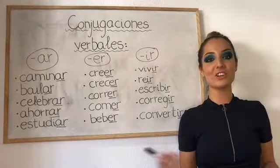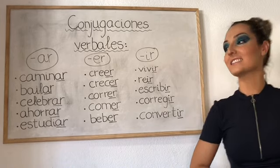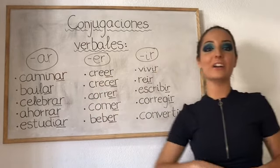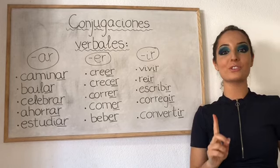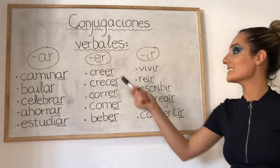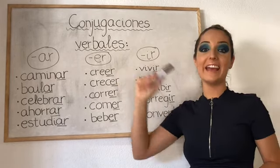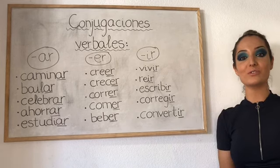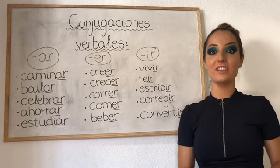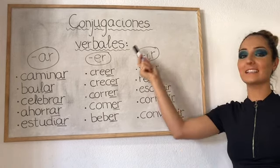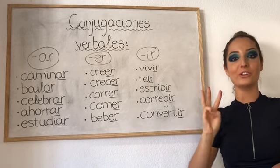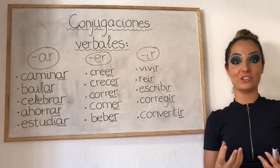In Spanish, any verb that ends in AR is going to be part of our first conjugation. Any verb that ends in ER will be part of our second conjugation, and any verb ending in IR will be part of our third conjugation.